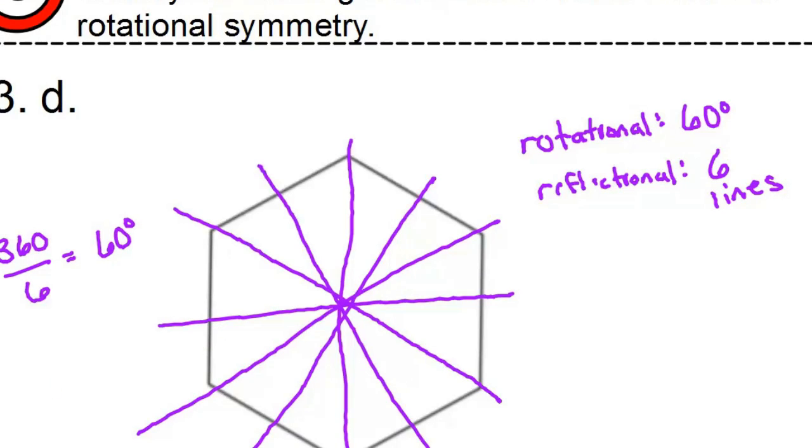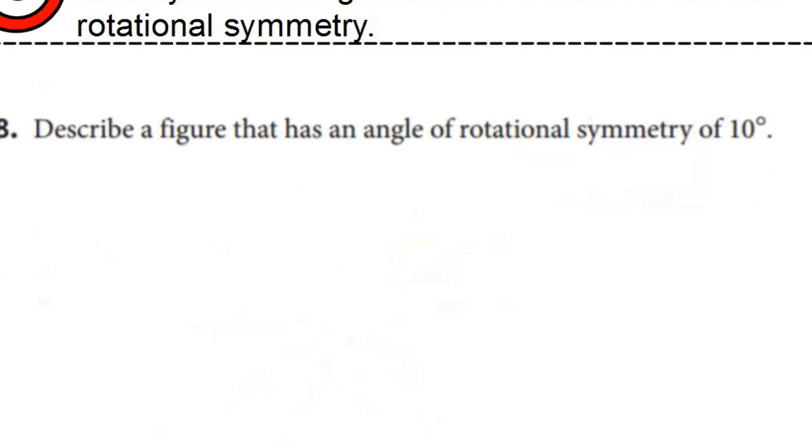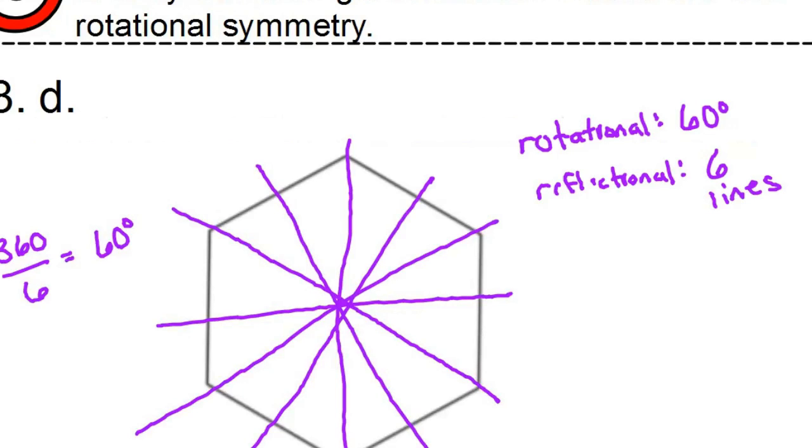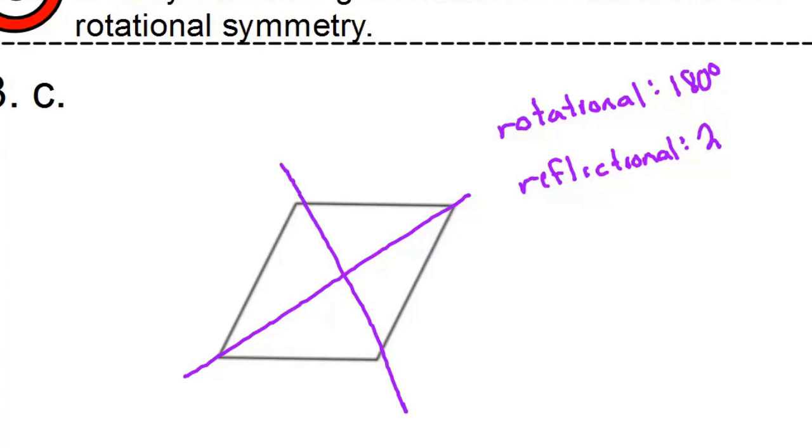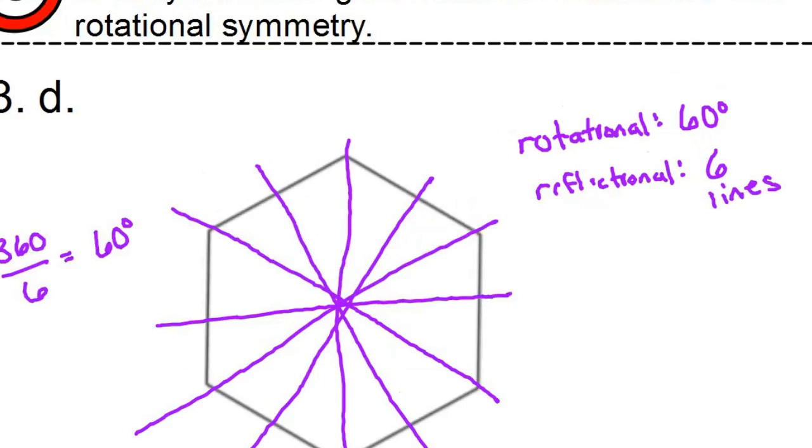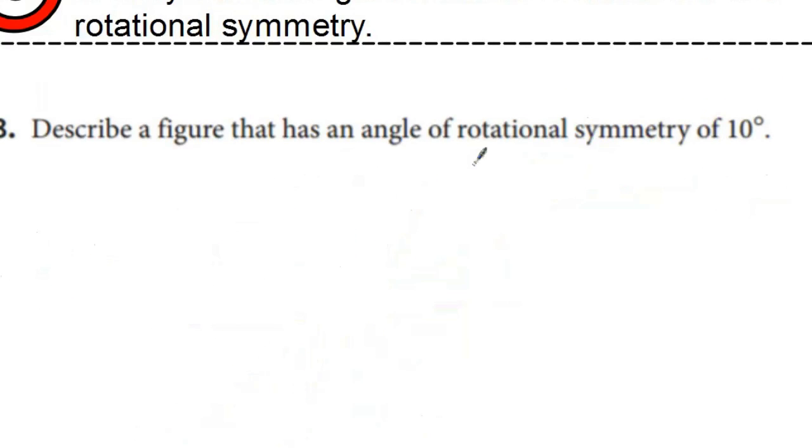So that is rotational and reflectional symmetry. So here's a little bit of a challenge question. Think about this: Describe a figure that has an angle of rotational symmetry of 10 degrees. So notice that all of the angles were divisible by 360, which makes sense because all of those angles have to add up to make a full turn somehow, right? So think about this. What is 360 divided by 10?